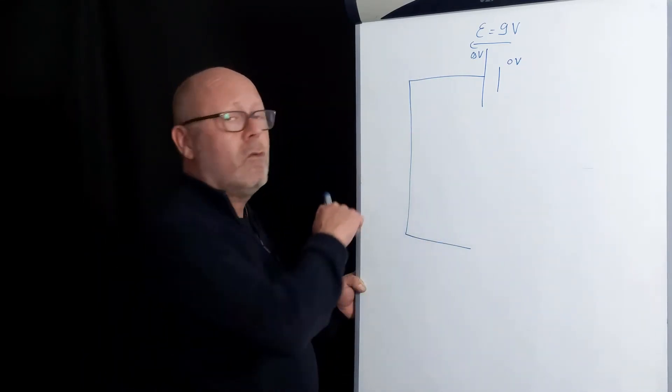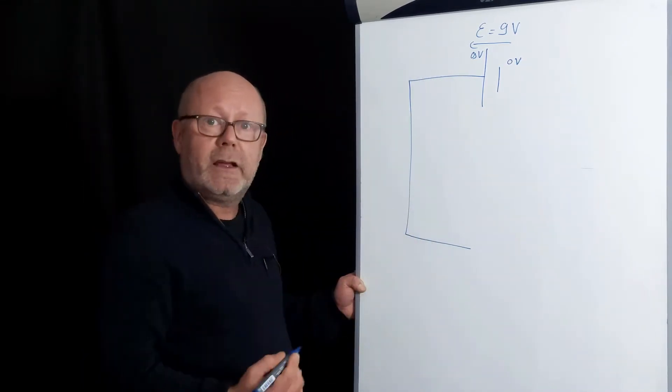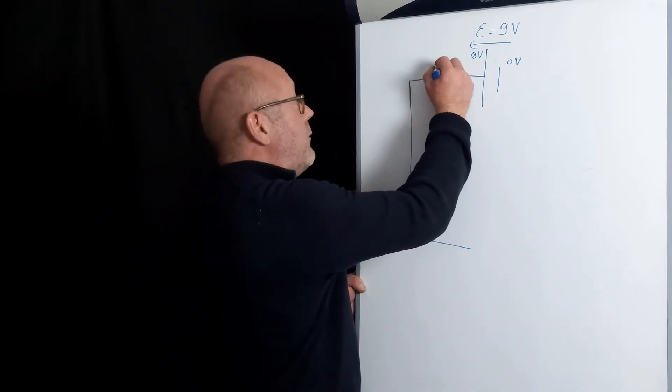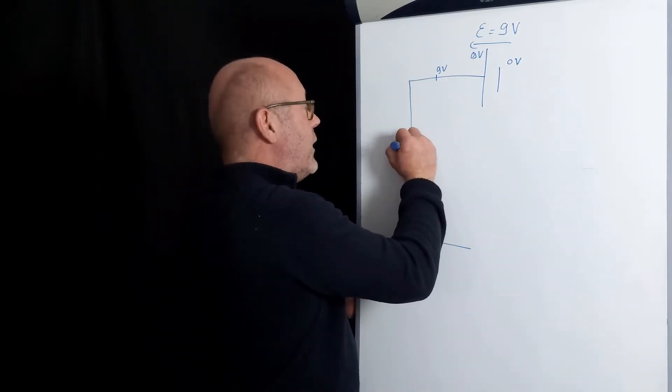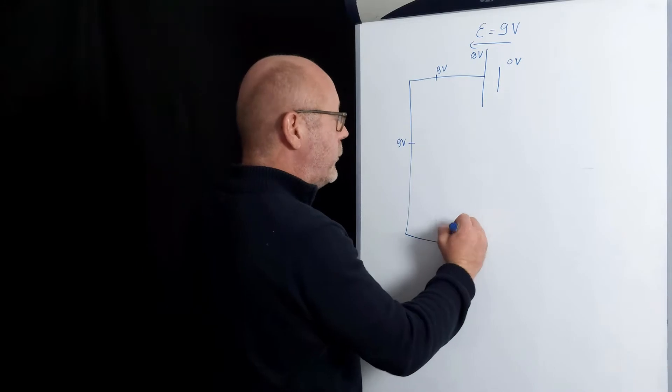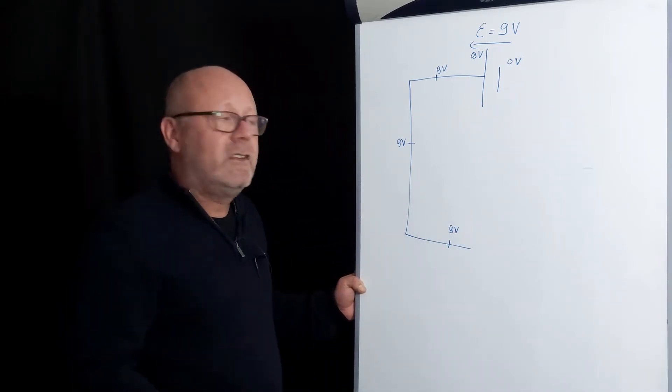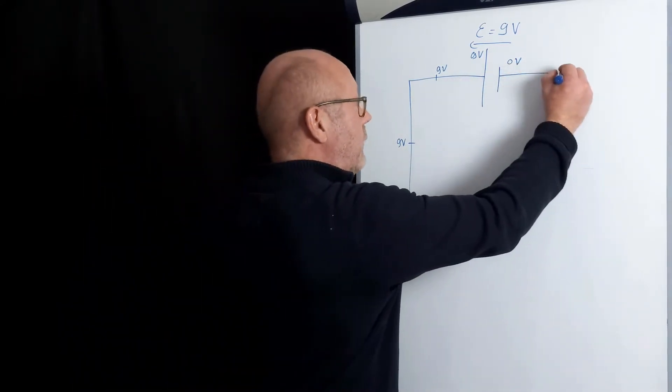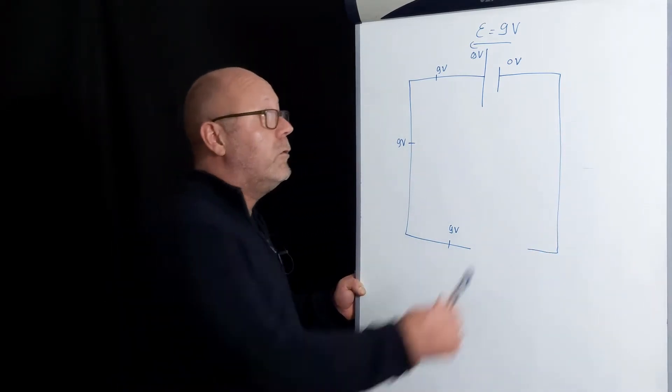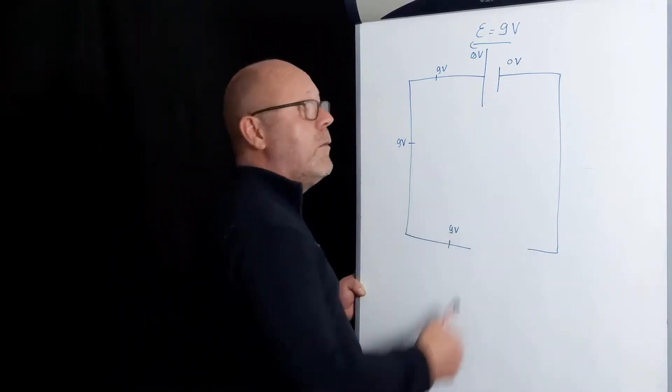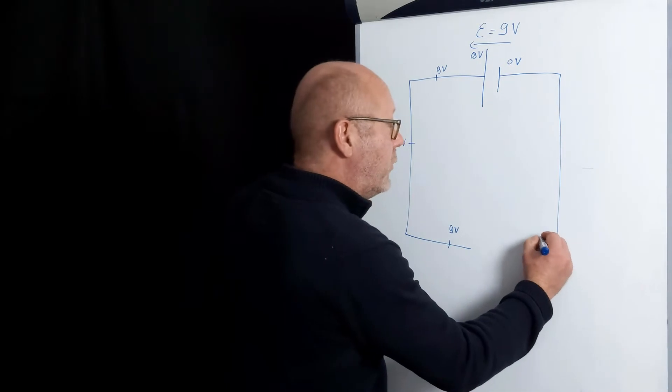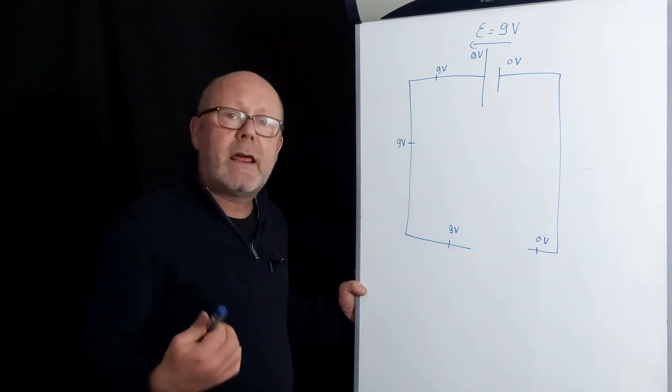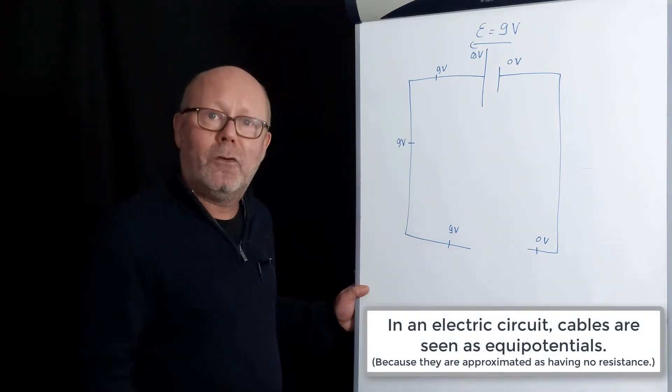Therefore, each coulomb charge will still hold 9J wherever it's positioned in the cable. So you would have 9V here, 9V there, and 9V there. You could imagine something similar on the other side, where one coulomb charge holds 0J wherever it is on the cable here. So you also have 0V there.